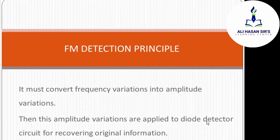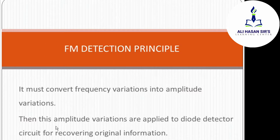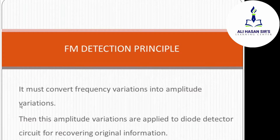Once converted to amplitude variation, this is applied to a diode detector circuit to recover the original information — similar to how we detect an amplitude modulated signal. The amplitude modulated wave is applied to the diode detector circuit to get back the original information signal.